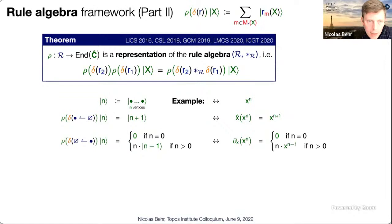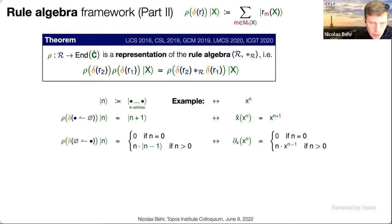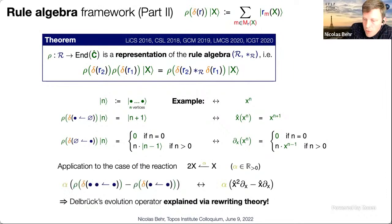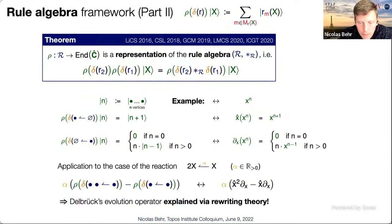If this rule composition operation is associative, you can show that the representation is a bona fide representation of the rule algebra, unlocking a computational device for reasoning about two-step sequences via composition of rules through the rule algebra product. For the Petri net example, the representation of the vertex-creating rule acts on state n as n+1, and the vertex-deleting rule acts as n times the state n−1. Using the Delbruck operator, the evolution equation follows directly.